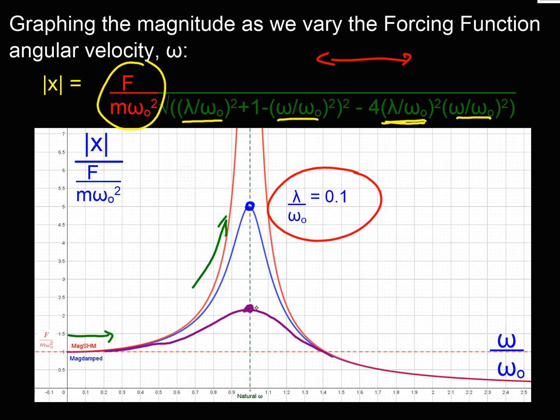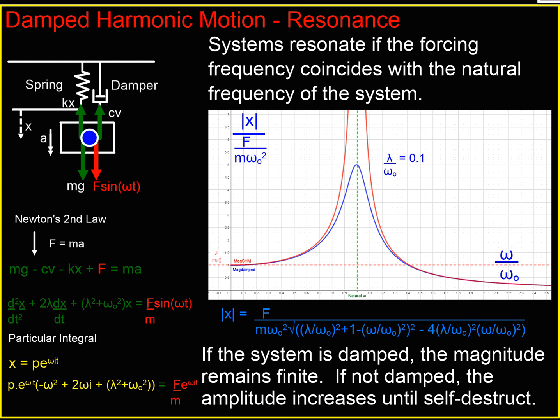In both cases, the magnitude increases when we get to resonance, when ω gets to ω₀, and we solve it by increasing the damping. There's my summary of the system. Left-hand side is the maths, right-hand side is the graphs. If the system's not damped, the red line says the magnitude goes off to infinity. If it is damped, it decreases the magnitude and avoids self-destruction of the system. I hope that was of interest to you. Bye now.